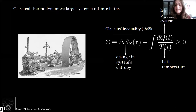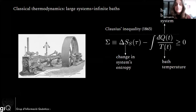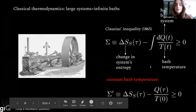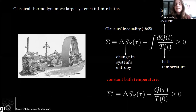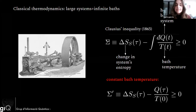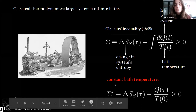Here dQ is the differential heat flux from the bath into the system, T(t) is the time-dependent temperature of your bath, and this term is the change in the entropy of your system. When you consider your bath to have a constant temperature, you can take T(t) out of the integral and you remain with this simple expression. We denote as σ the entropy production — the sum of these two terms — and when we restrict to constant bath temperatures, we denote it as σ'.